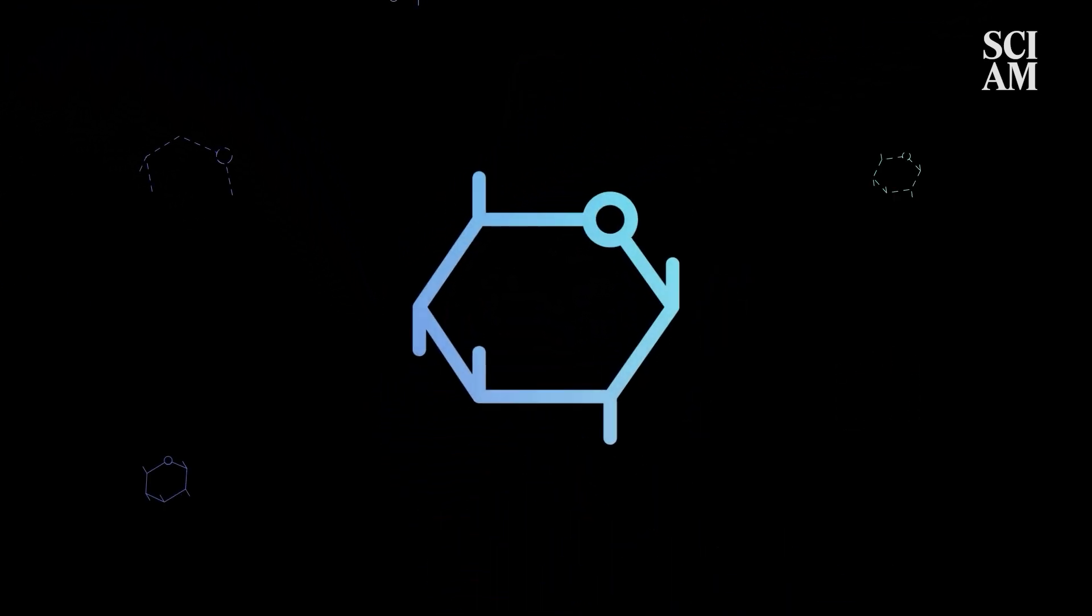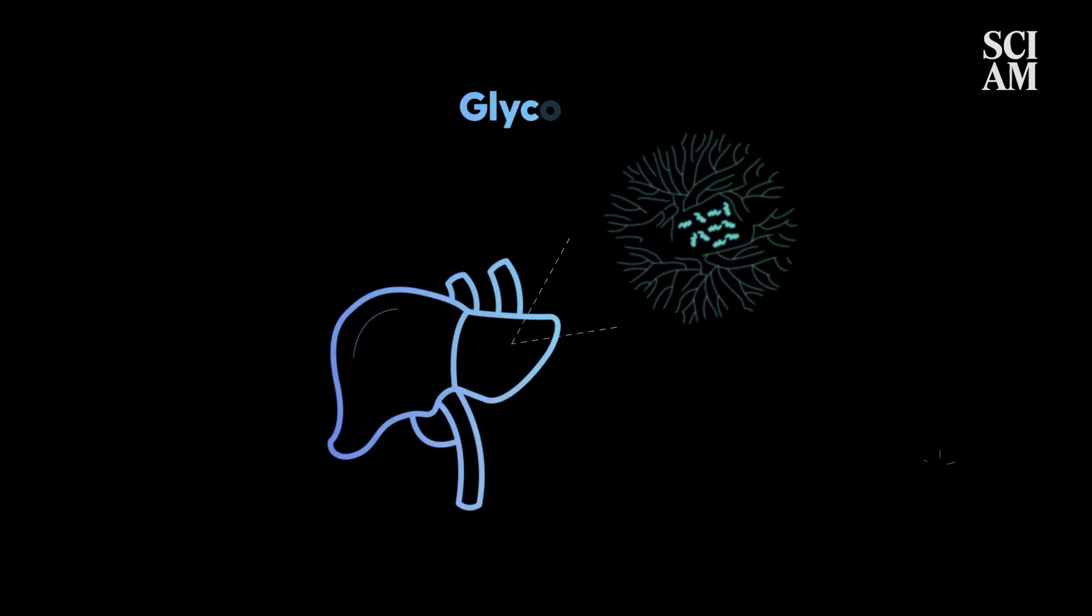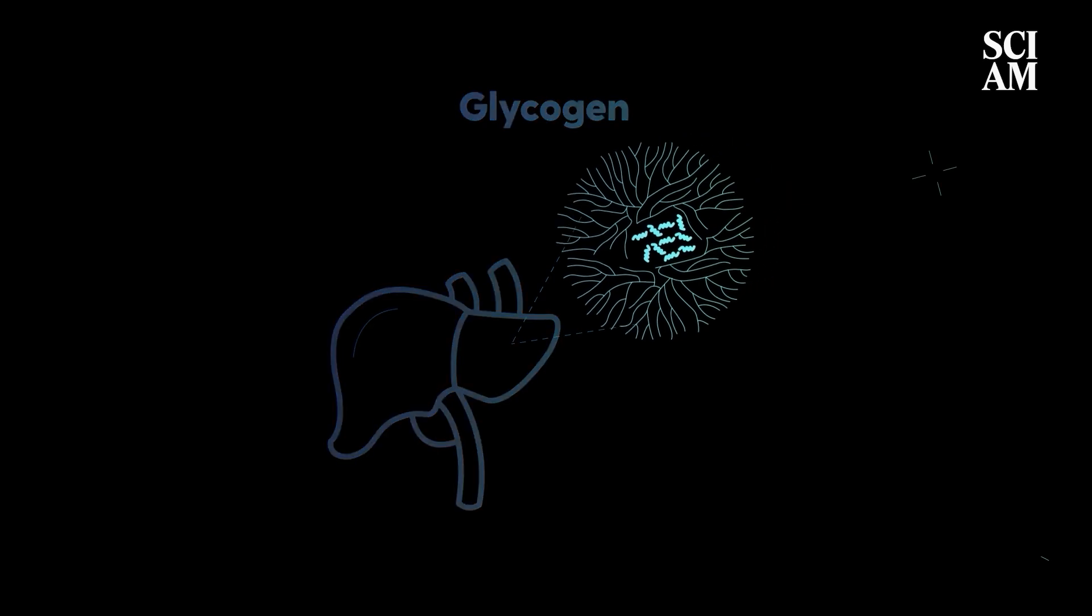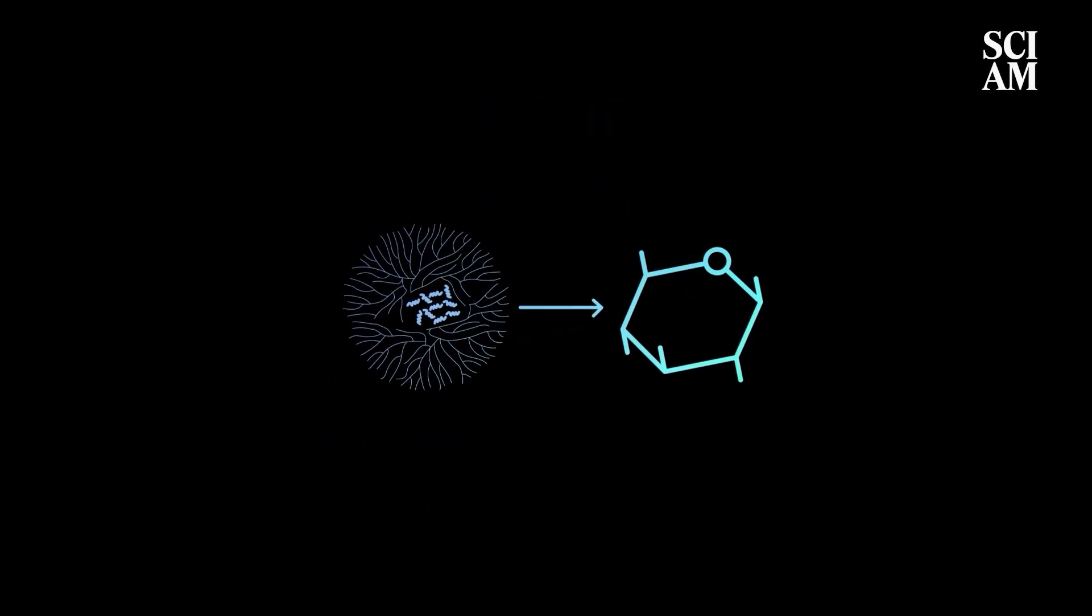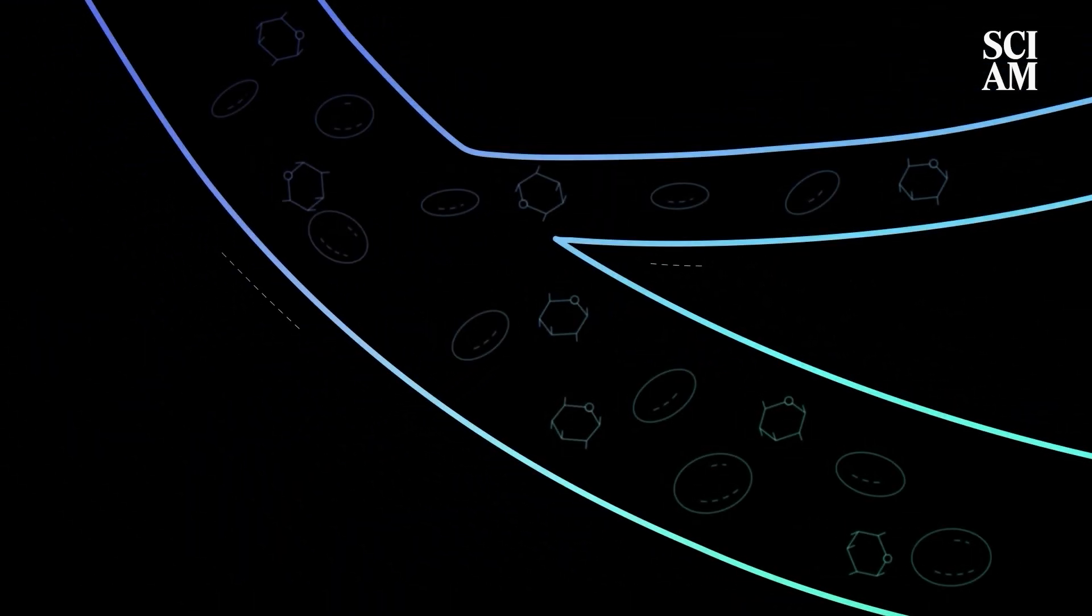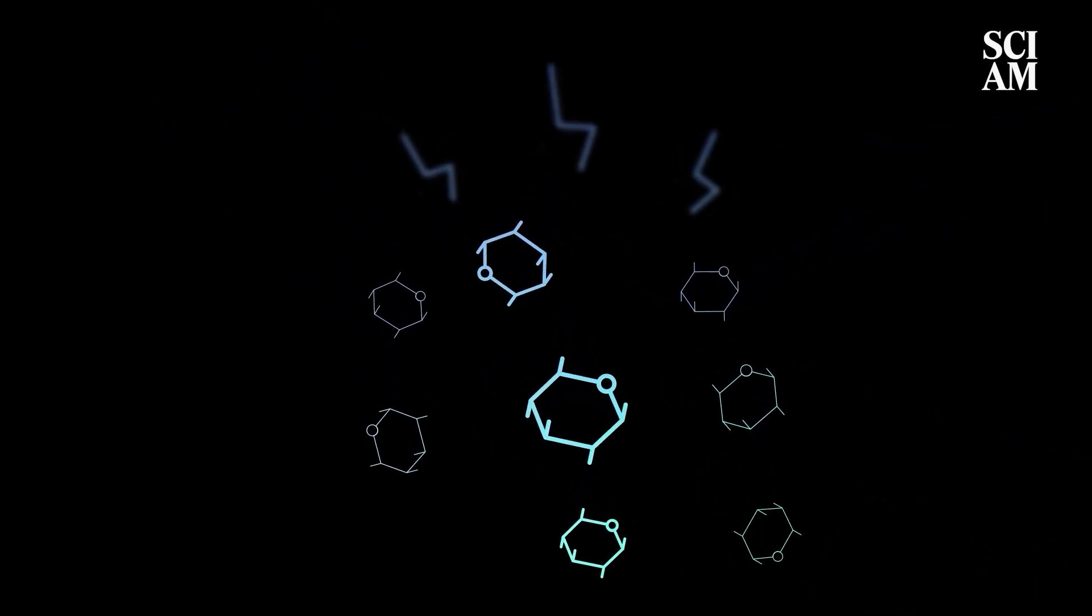When we eat, the glucose from our food gets stored in the liver as glycogen. And based on our body's needs, the liver will convert that glycogen back into glucose so that it can travel through the blood and get to our cells, which turn that glucose into energy.